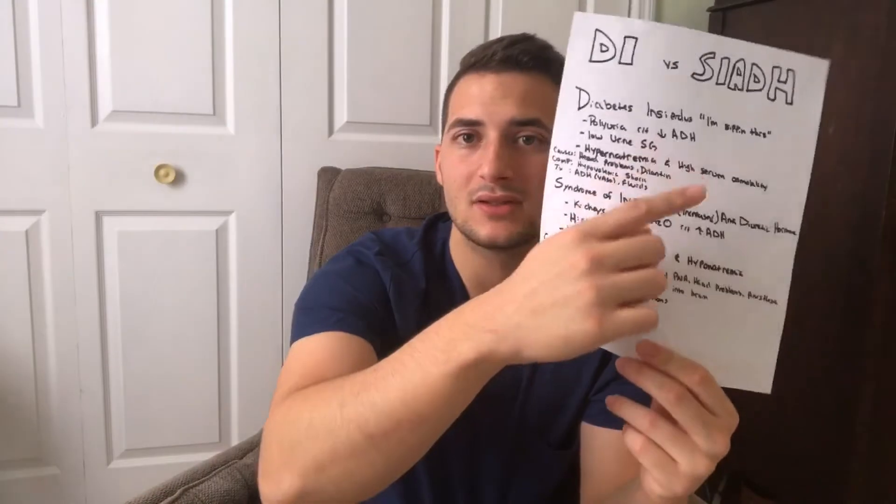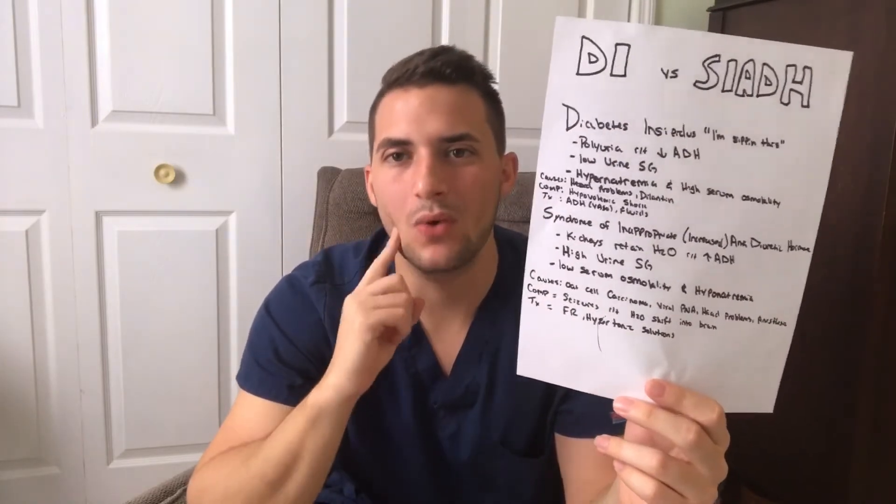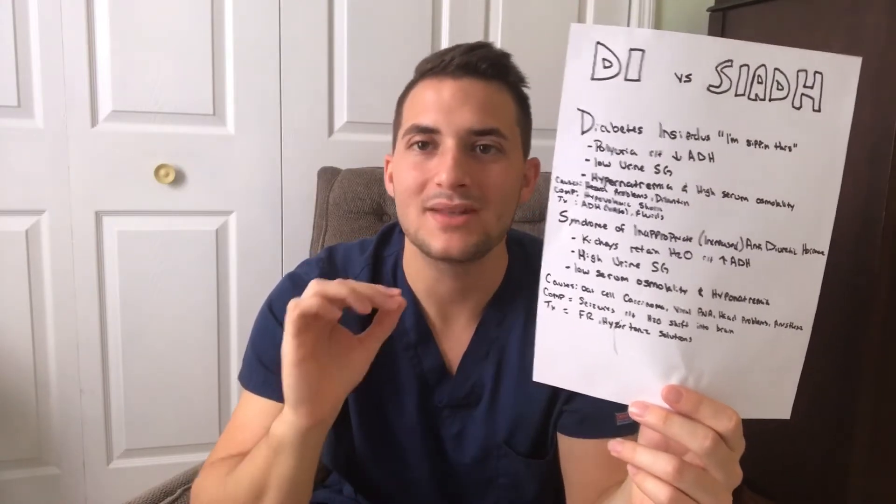The other end of this — diabetes insipidus versus SIADH. SIADH is Syndrome of Inappropriate Antidiuretic Hormone. The best thing I was ever told in a lecture was: why did they name it that? They should have named it Syndrome of Increased Antidiuretic Hormone — and I loved that. Syndrome of Increased Antidiuretic Hormone. Now everything starts to make sense.